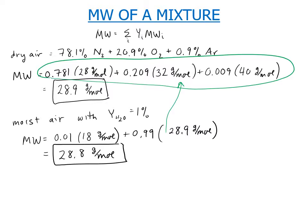So in general, if we have moist air, then the molecular weight is equal to Y of the H2O times the molecular weight of H2O, plus 1 minus Y of H2O times the molecular weight of the dry air.